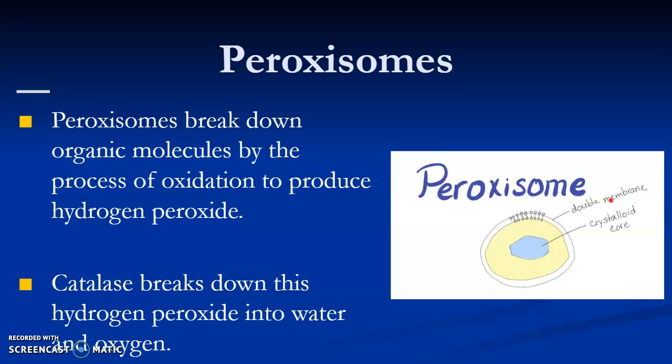Remember 'LEO goes GER': LEO stands for Losing Energy = Oxidation, and GER stands for Gaining Energy = Reduction. So oxidation means it loses energy to produce hydrogen peroxide. Catalase then breaks down that hydrogen peroxide into H2O and oxygen — water and oxygen — because water is H2O.